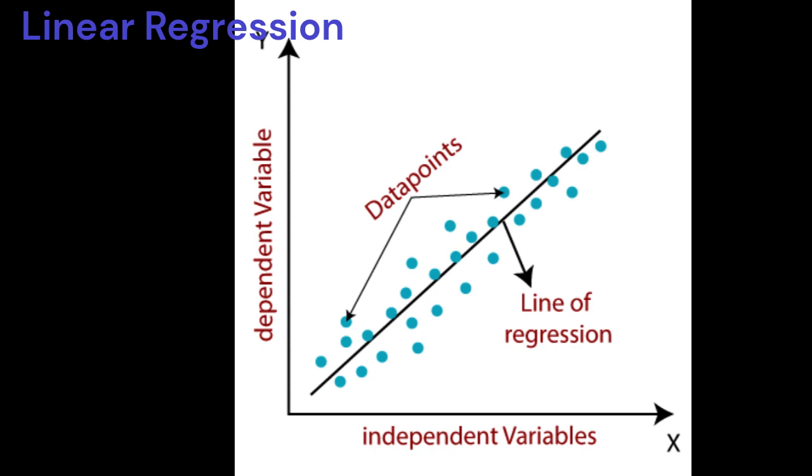Linear regression makes predictions for continuous, real, or numeric variables such as sales, salary, age, product price, etc.